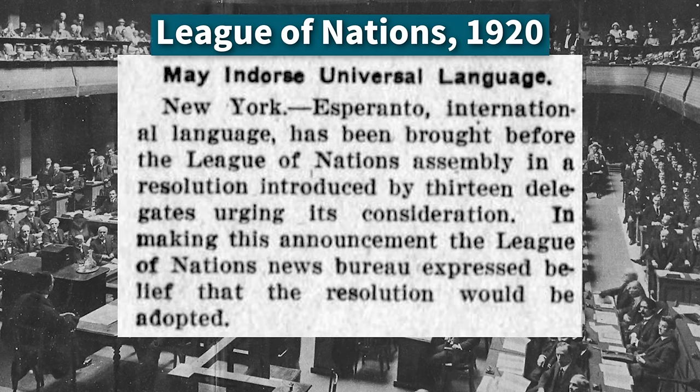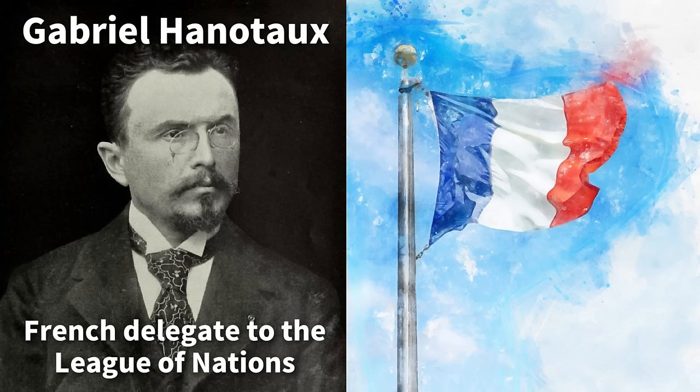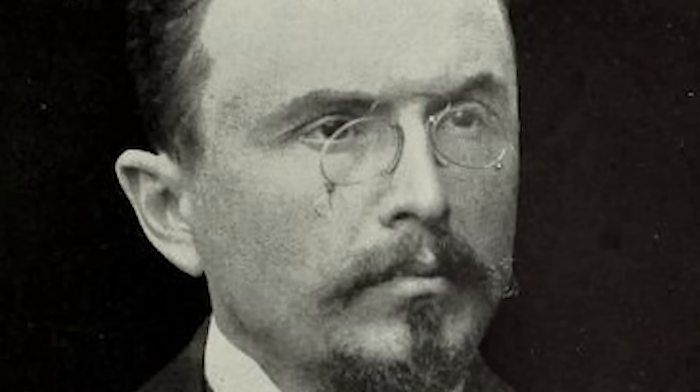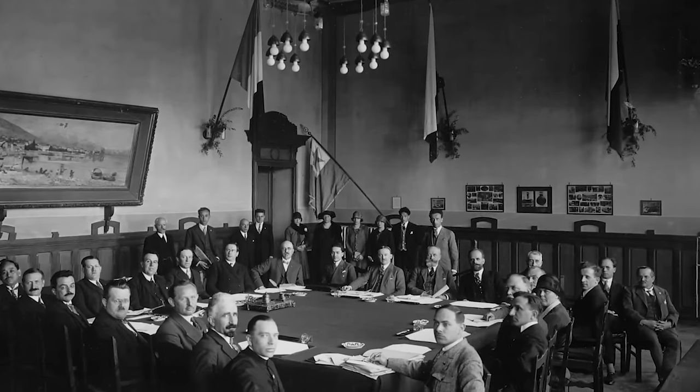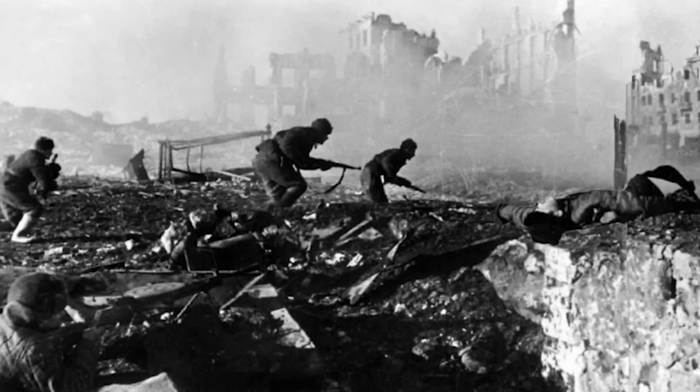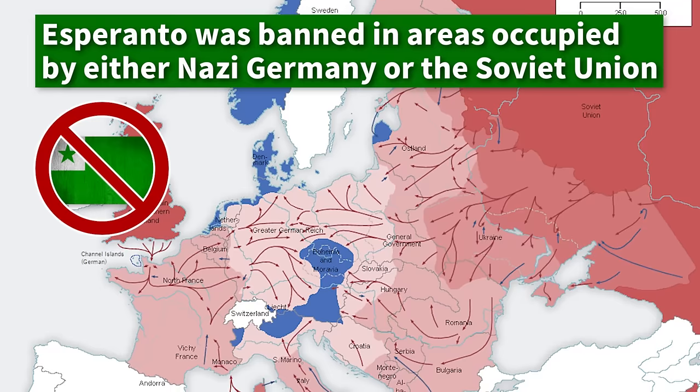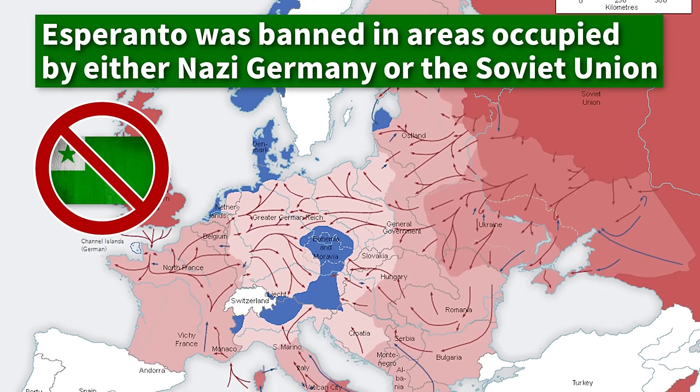In 1920, the League of Nations introduced a proposal to use Esperanto as a language of diplomacy. Almost every delegate accepted the proposal, except for one — the French delegate. He used France's veto power to block it. Why? French was a major language of international relations at the time but was starting to decline, so France must have seen the adoption of Esperanto as a threat to its status and influence. Despite the loss of that major opportunity, the Esperanto movement continued to make progress, but it was seriously disrupted by the Second World War and the banning of Esperanto in all areas occupied by either Nazi Germany or the Soviet Union. Esperanto didn't die, but the war destroyed much of its momentum.